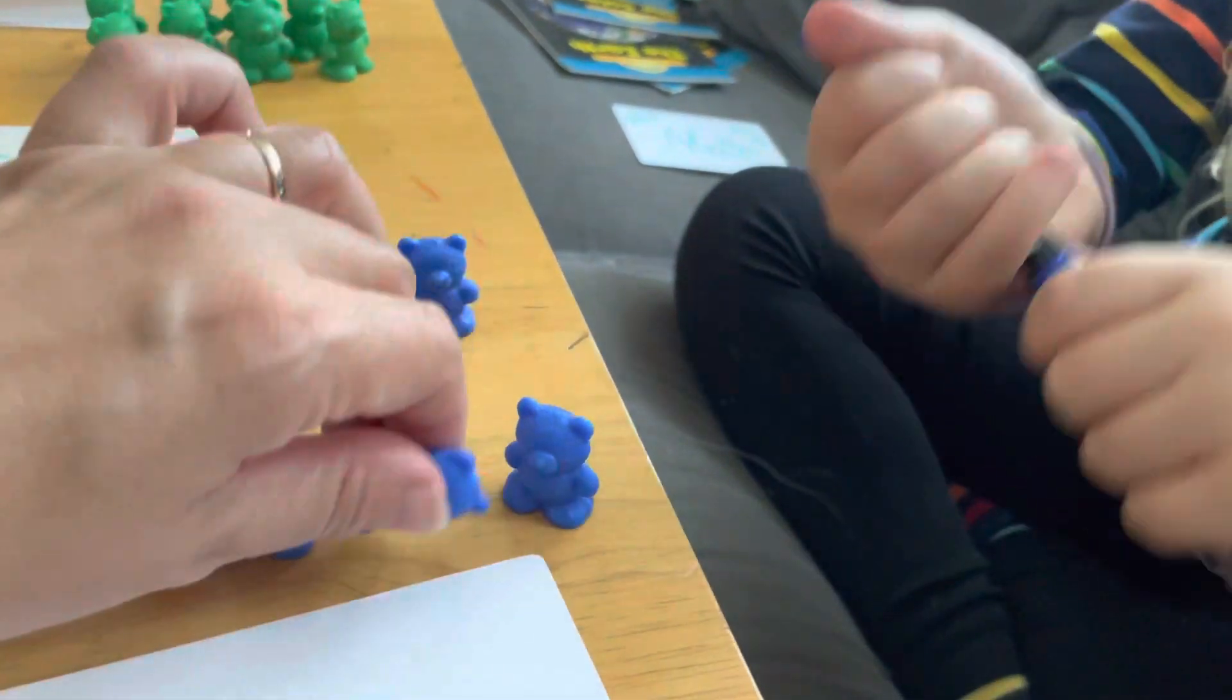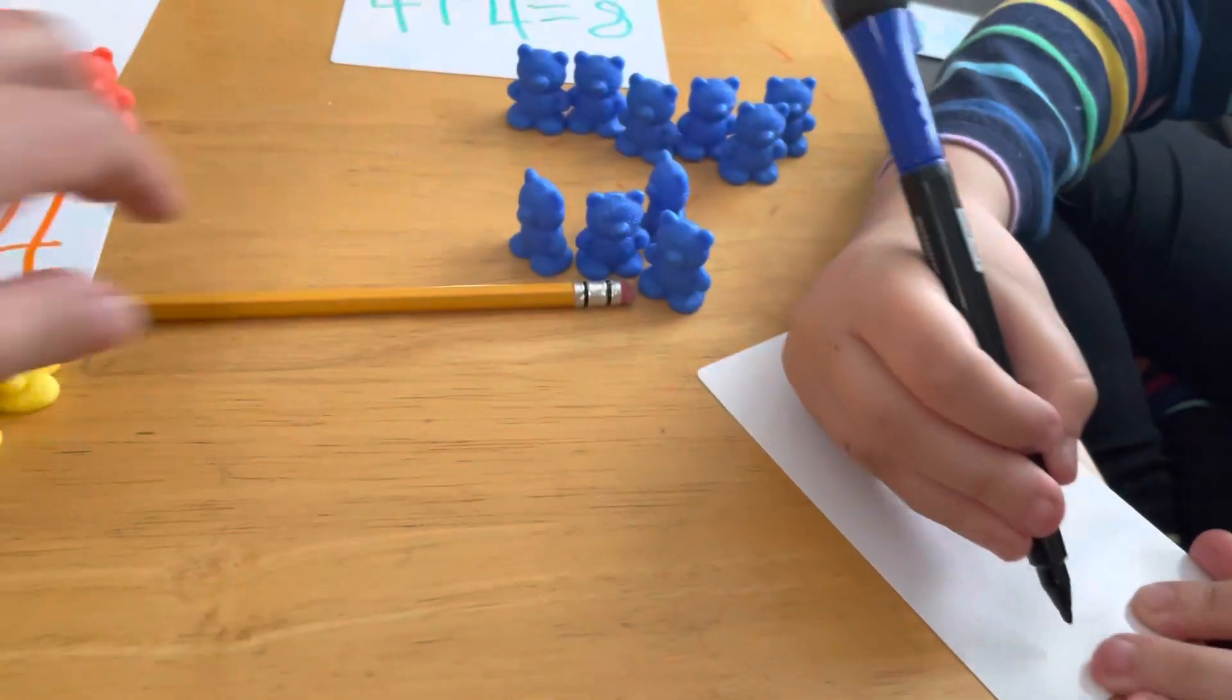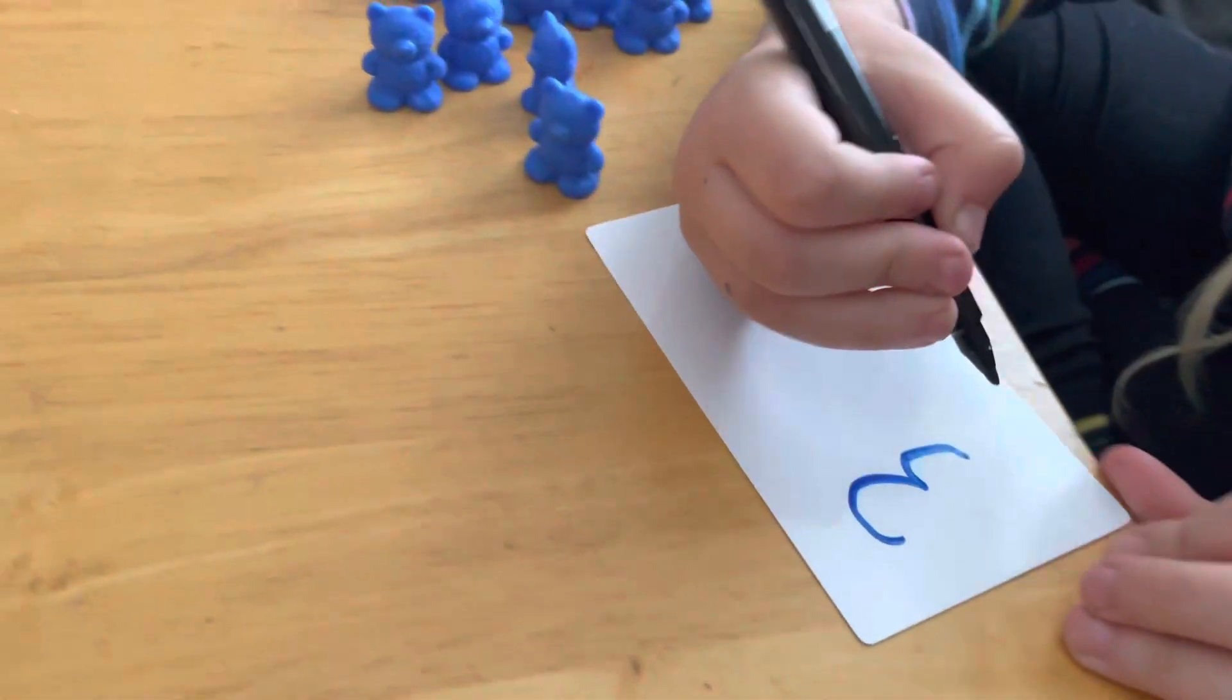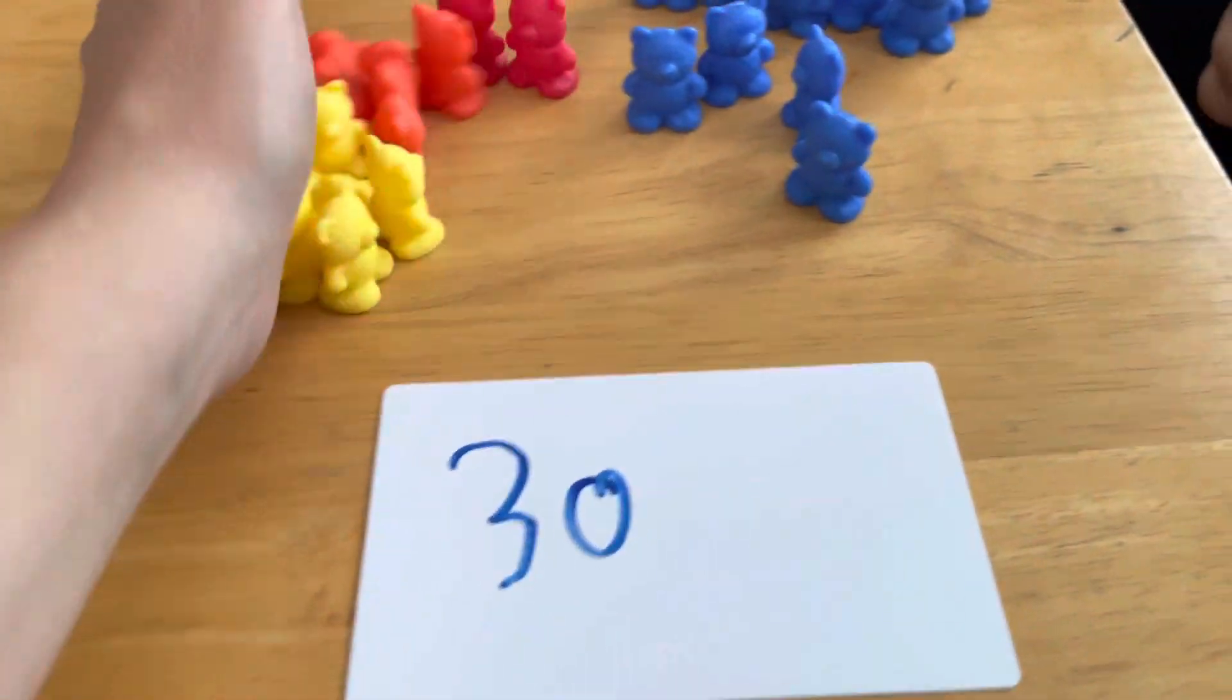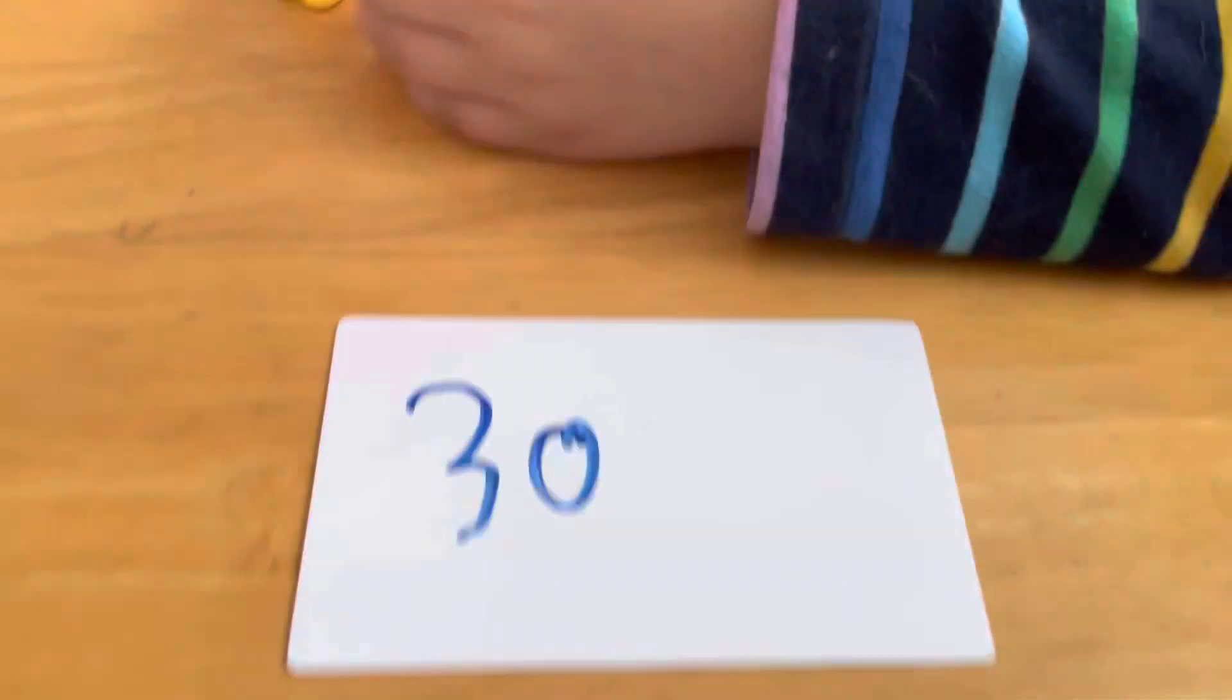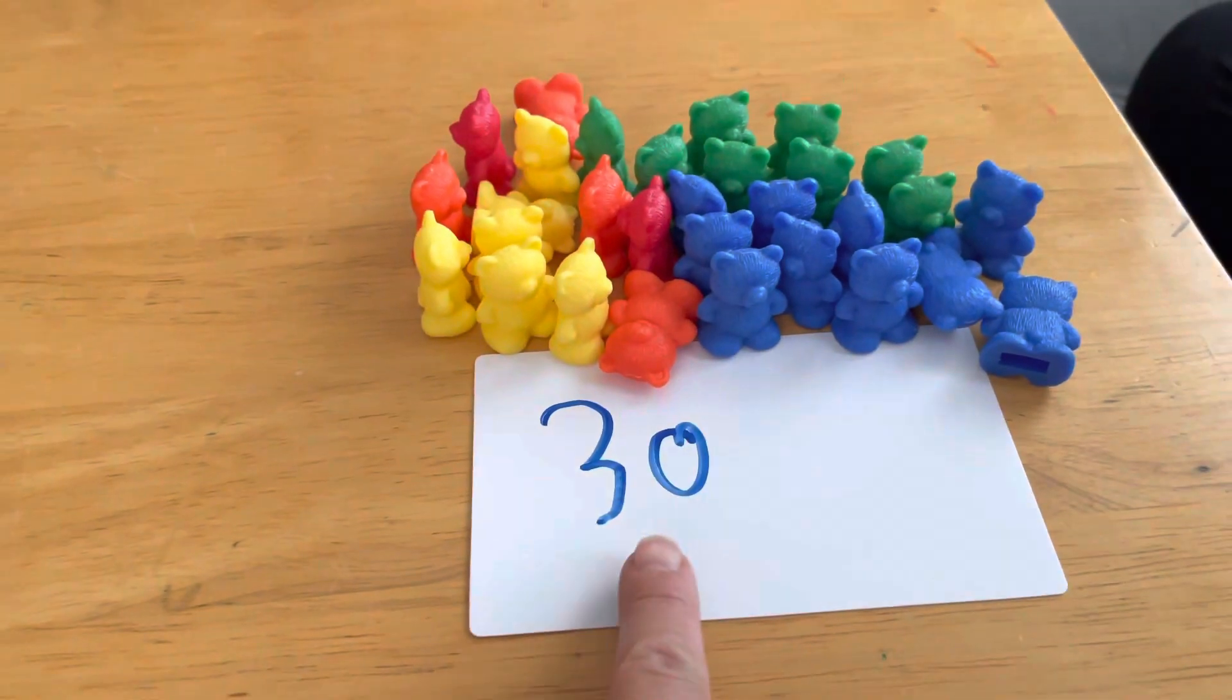Let's write down what that looks like. Can you show me what a thirty looks like? Okay, sorry about the wait. So all the bears, let's move them all together. How many bears is that all together? Thirty. Thirty bears, that's thirty.